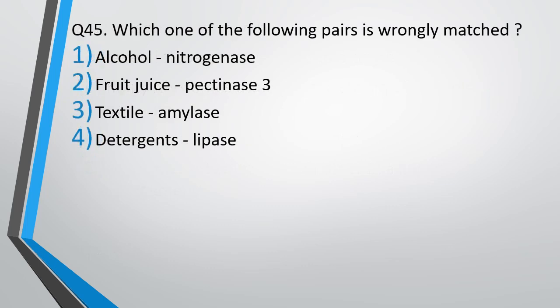Question number 45. Which one of the following pairs is wrongly matched? Alcohol - nitrogenase, fructose - pectinase, textile - amylase, detergent - lipase. Wrongly matched - correct answer is option A, alcohol - nitrogenase is wrongly matched.